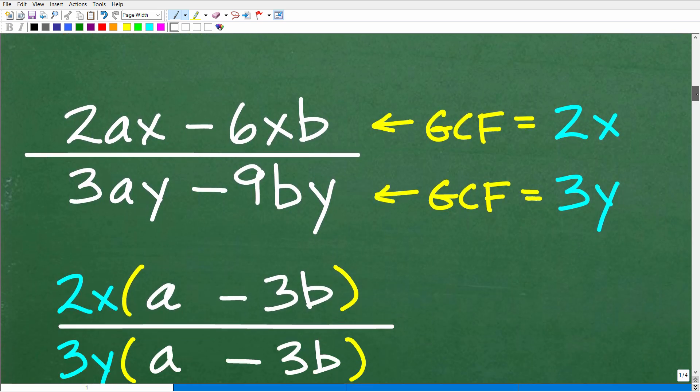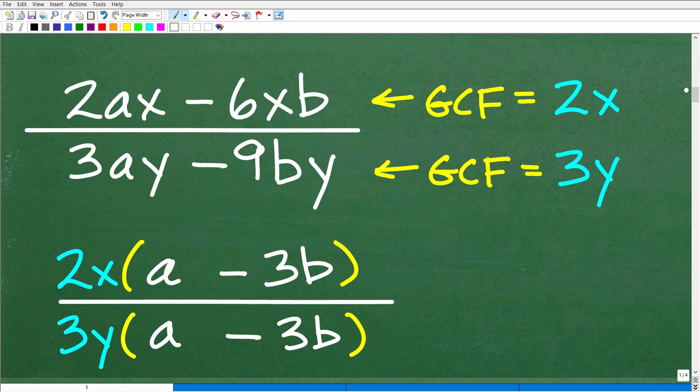So how do we factor this stuff? Well, you need to recognize that here we have a greatest common factor. In other words, we can factor out a 2x. Now, if you look, what's common? What's a common factor?